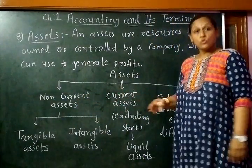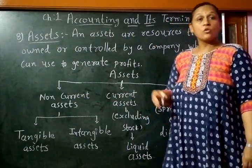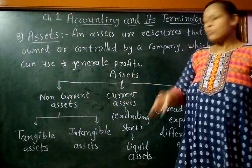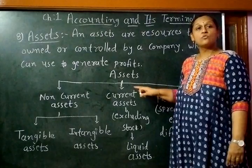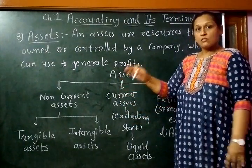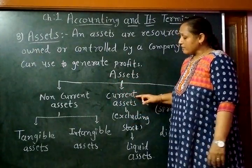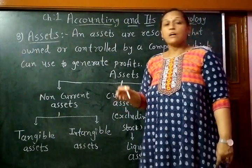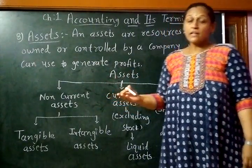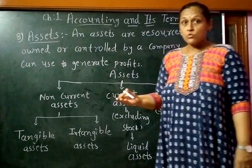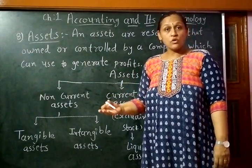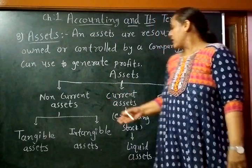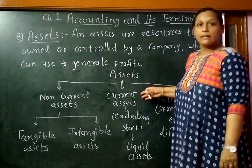Current assets are those assets that are not going to stay more than one year. That means the money of that asset is converted into cash within one year. Examples of current assets are bank balance, raw material stock, semi-furnished goods stock, finished goods stock, debtors, or business receivables.